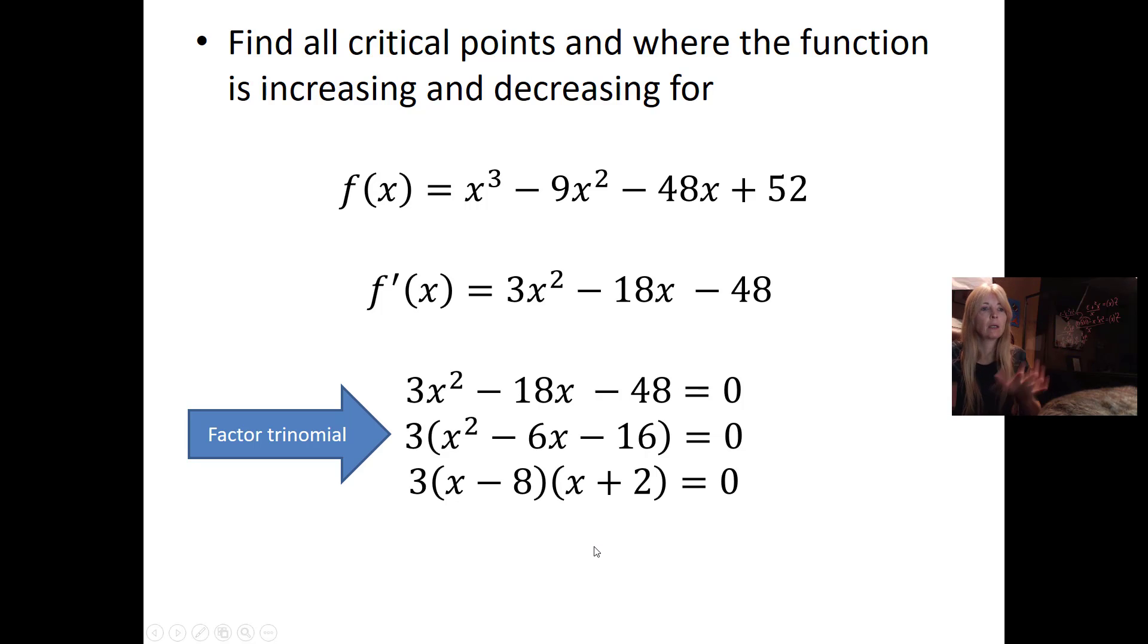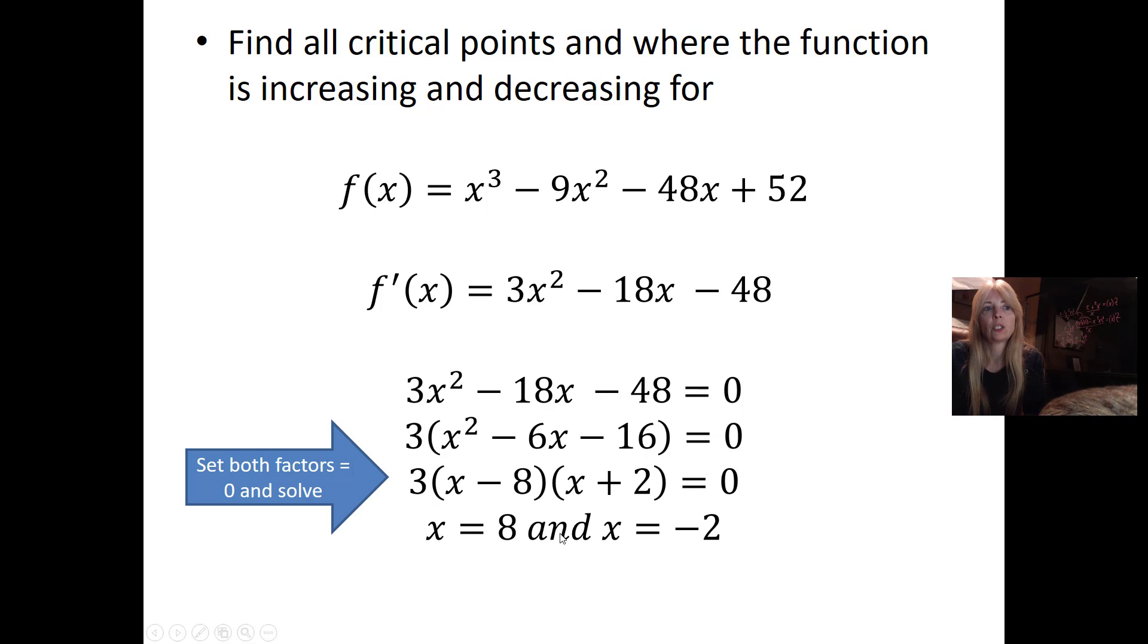Then remember that you set your factors equal to zero. We don't have to worry about the three because it's just a constant. So we set x minus 8 equal to zero, which means x equals 8. x plus 2 equal to zero, which means x equals negative 2. Those would be our two critical points.